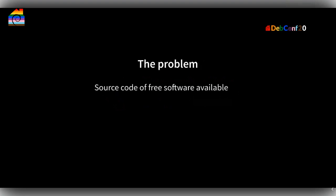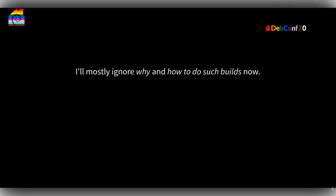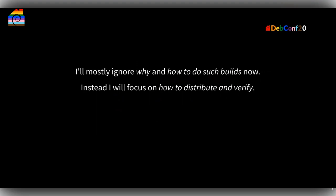Reproducible Builds — small introduction. The problem is really simple: there's source code for free software available, and most people install pre-compiled binaries. We have no idea whether this binary really comes from the source. That is the problem of Reproducible Builds. If you go to reproducible-builds.org, there's a video section with many good introductions. I'll just concentrate on Bullseye and how to distribute and verify, because we've covered how to do reproducible builds but haven't really distributed and verified them.